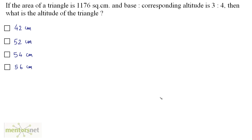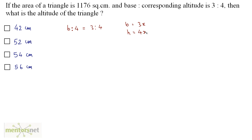If the area of a triangle is 1176 square centimeters and base to corresponding altitude is 3 is to 4, then what is the altitude of the triangle? We have been given the ratio of base and height as 3 is to 4, so I can write B equals 3x and the height equals 4x, x being a constant.